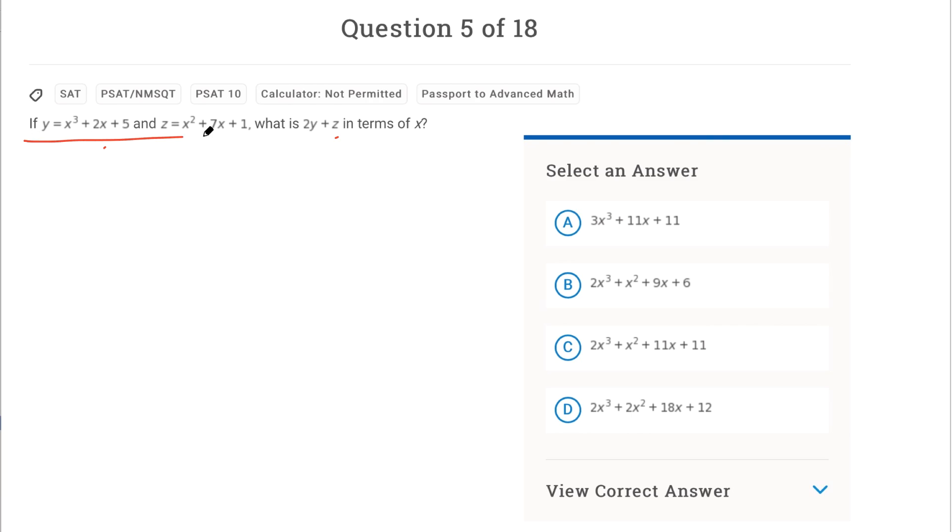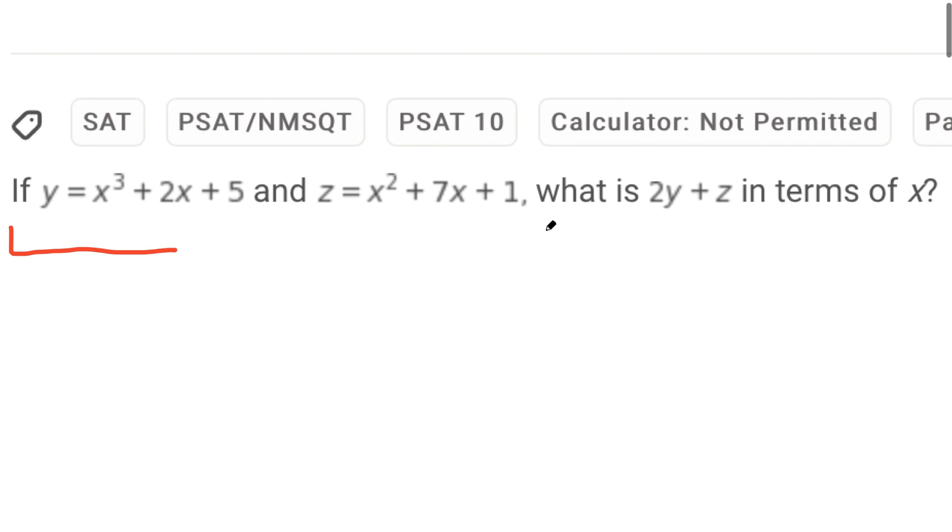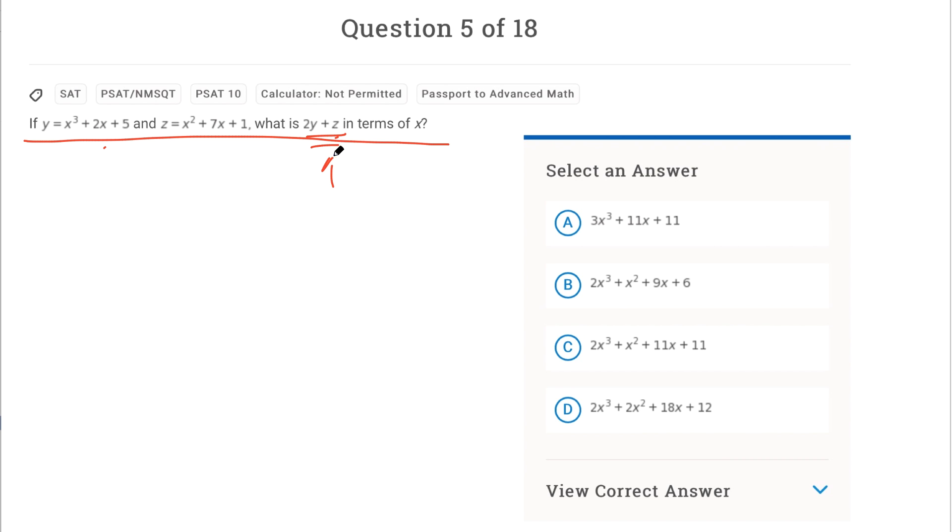Here's one problem where that's true. If y = x³ + 2x + 5 and z = x² + 7x + 1, what is 2y + z in terms of x? As you can see, we've got two equations and then we have what's called an expression here. I call these equation-expression questions. What I'm going to do here is use substitution. I'm going to plug in my z and my y into this expression. So this is a lot of adding, combining terms, some foil, but I don't want to waste time so I'm going to be a little smart.